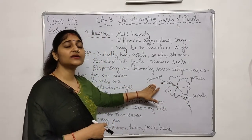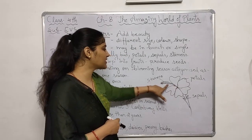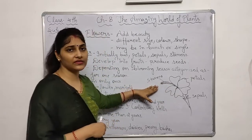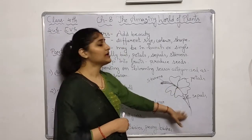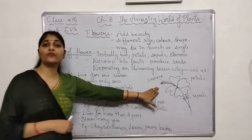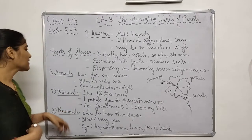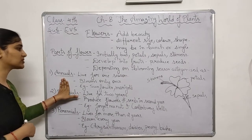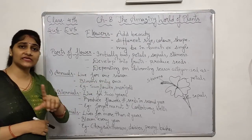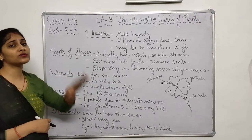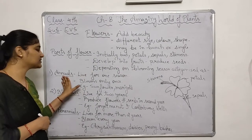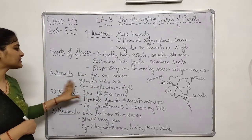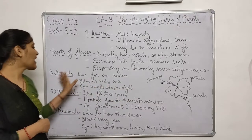We have discussed petals and sepals. Now the stamens are also a part of a flower. Depending on their blooming season, flowers are categorized into three types: annuals, biennials, and perennials. Annual plants are those that grow flowers in one season and after flowering the plant dies. Examples of annual plants are sunflower and marigold.